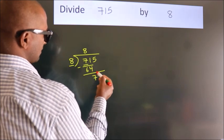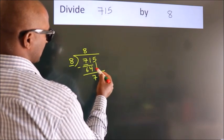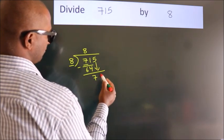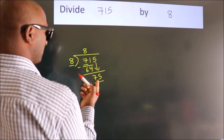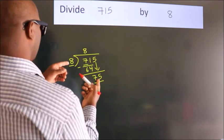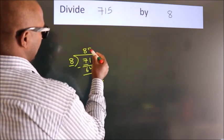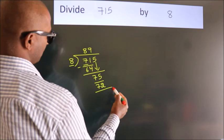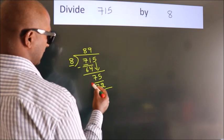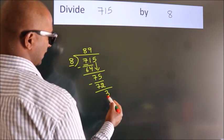After this, bring down the next number: 5. So, 75. A number close to 75 in the 8 table is 8 times 9 equals 72. Now we subtract and get 3.